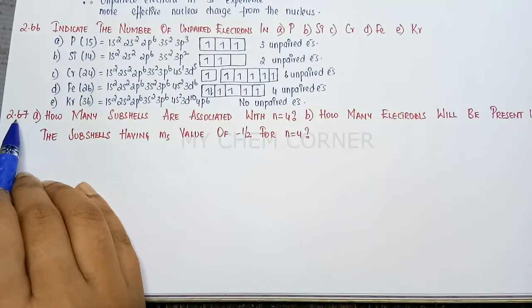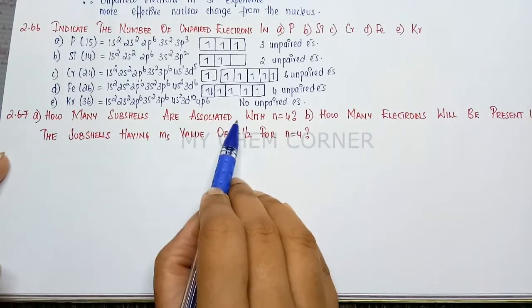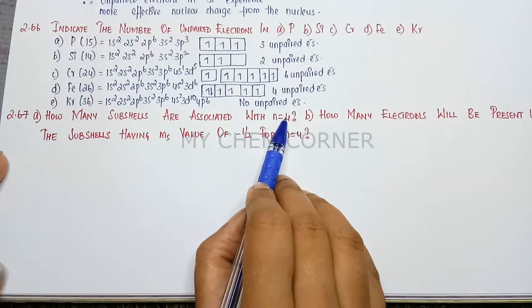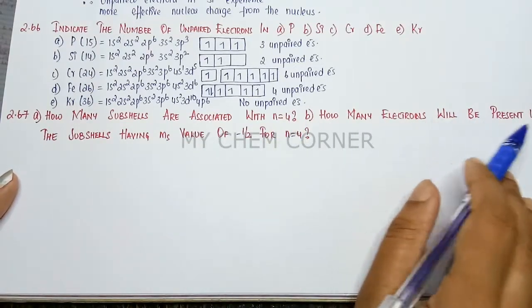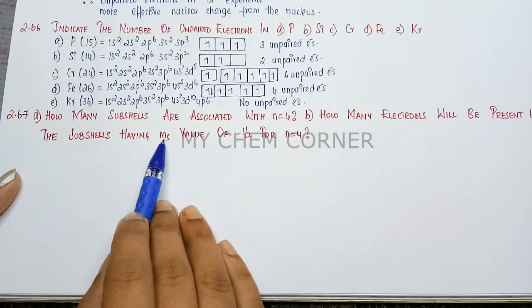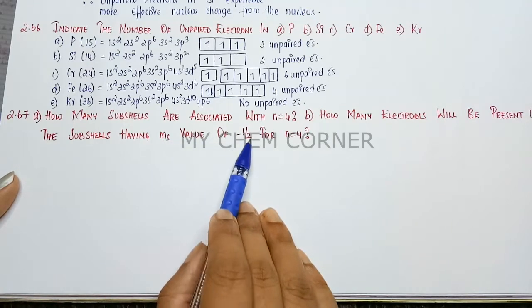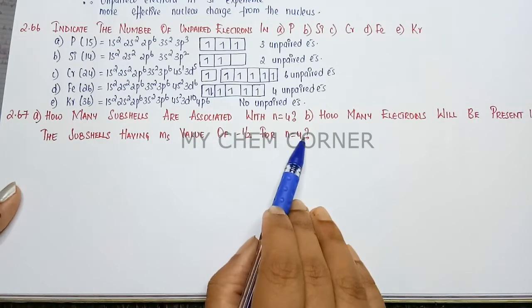Next is question number 2.67. How many subshells are associated with n is equal to 4? Second question is how many electrons will be present in the subshell having ms value of minus half for n is equal to 4?